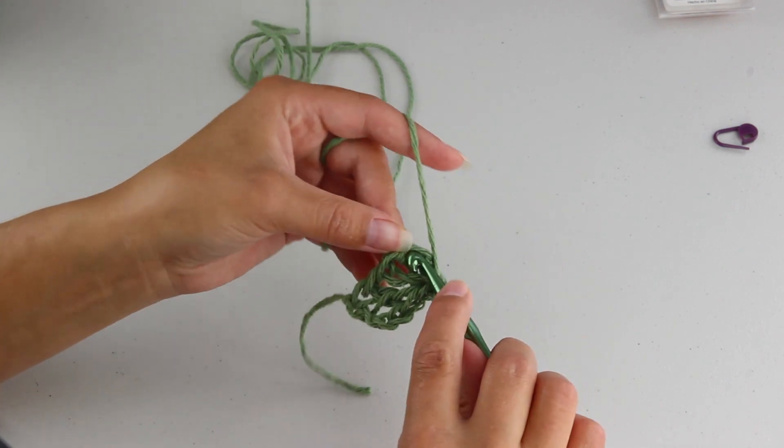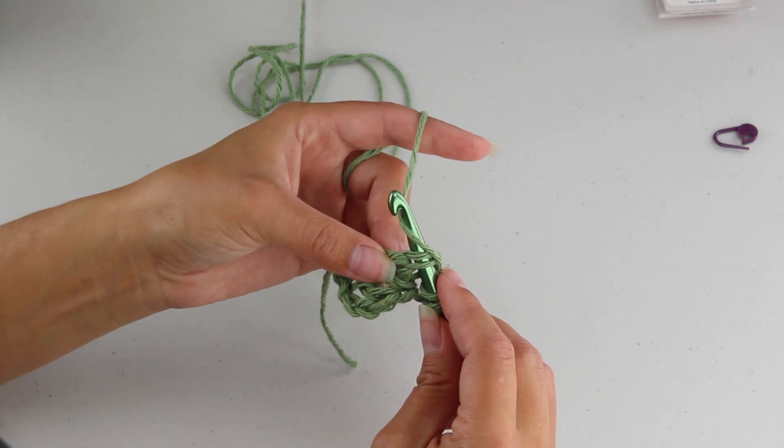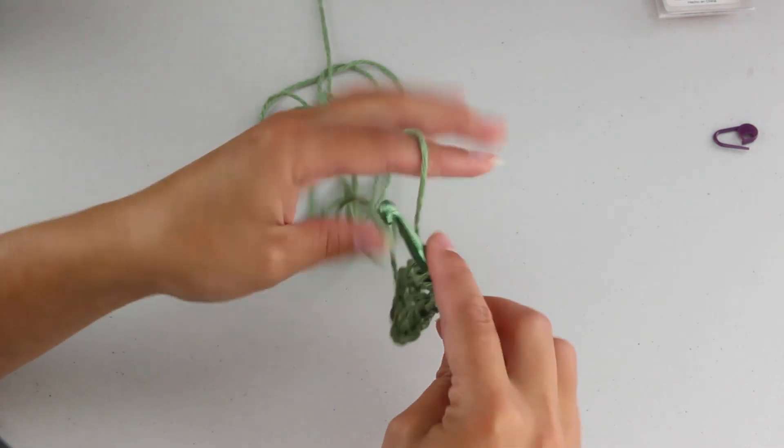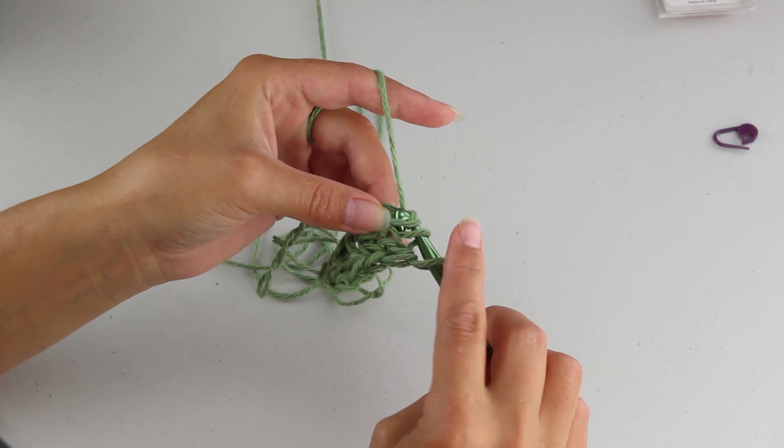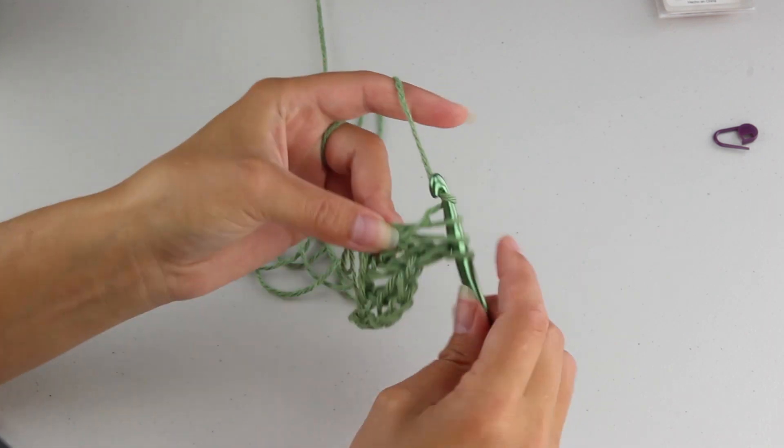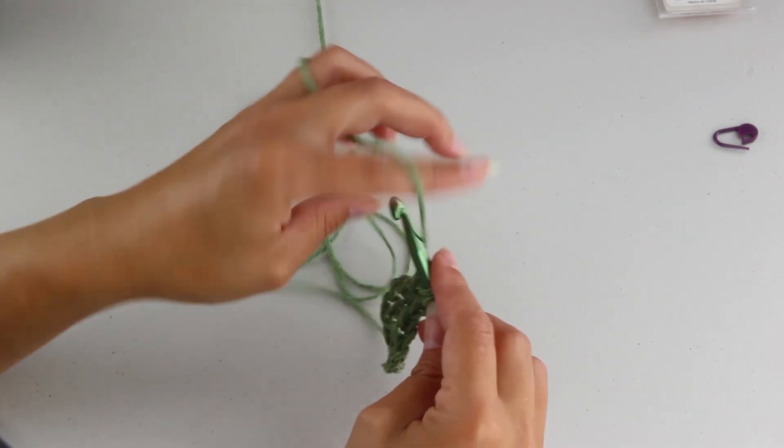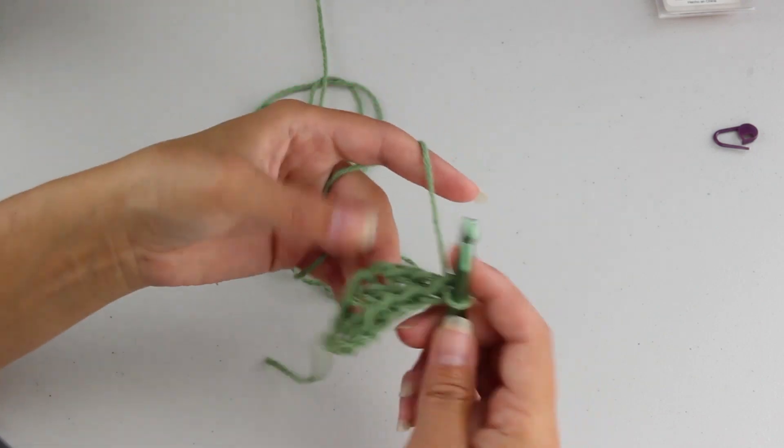Yarn over, insert your hook at the bottom, yarn over and pull through, yarn over, pull through one, yarn over, pull through two, yarn over, pull through two.